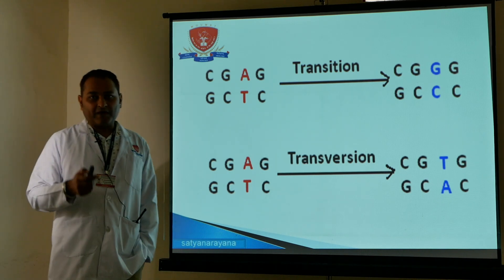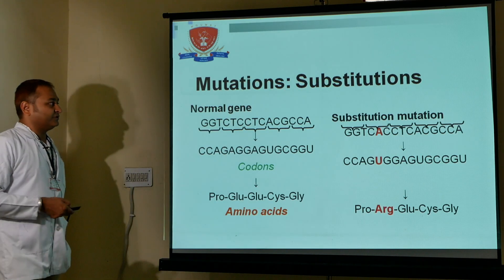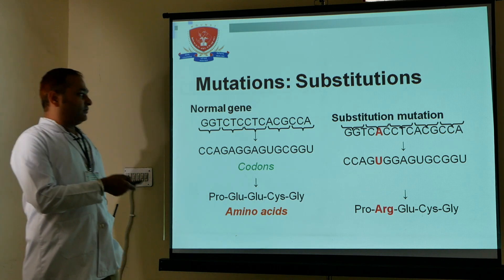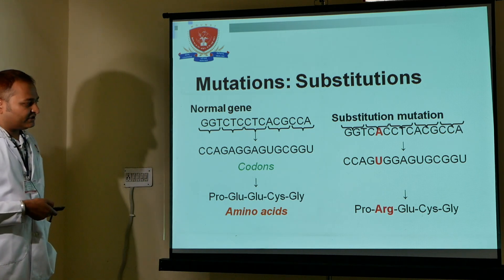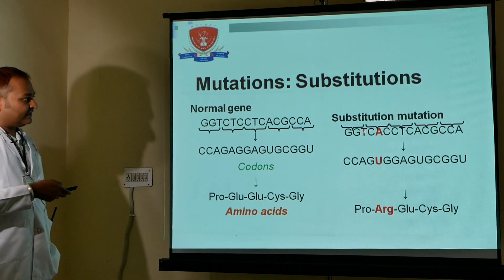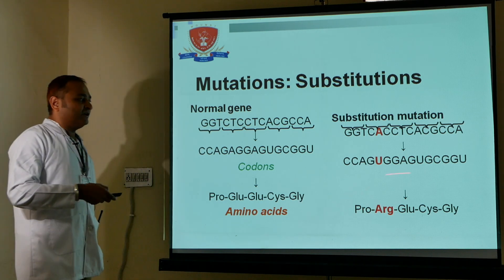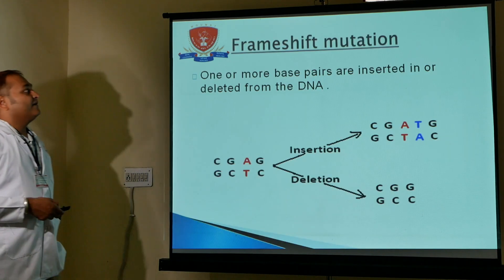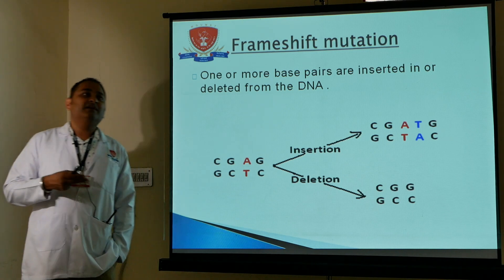You can see the normal gene with its codon and amino acid. If there is a change in the sequence, a different type of amino acid is recognized. This leads into frameshift mutation, where insertion or deletion of a base pair occurs.